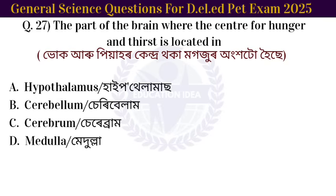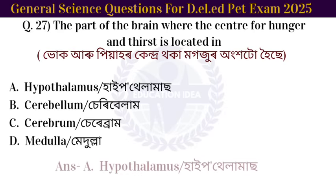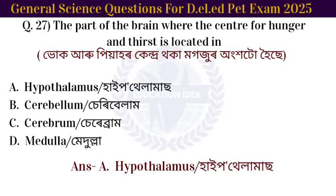Next question: the part of the brain where the center for hunger and thirst is located is the hypothalamus.